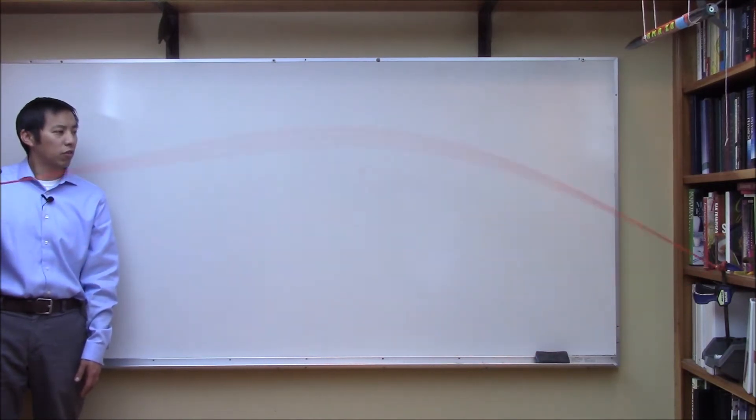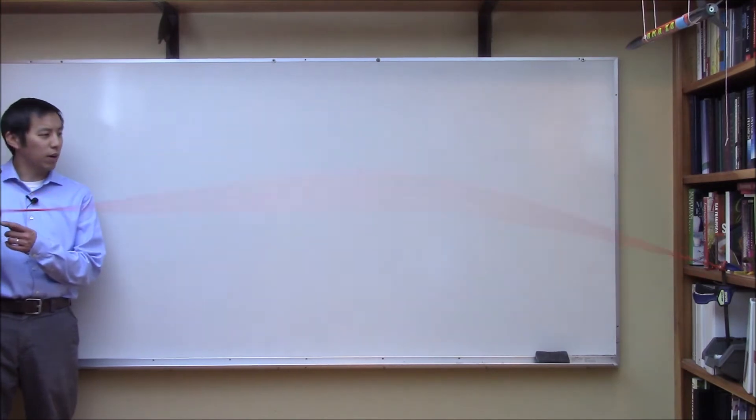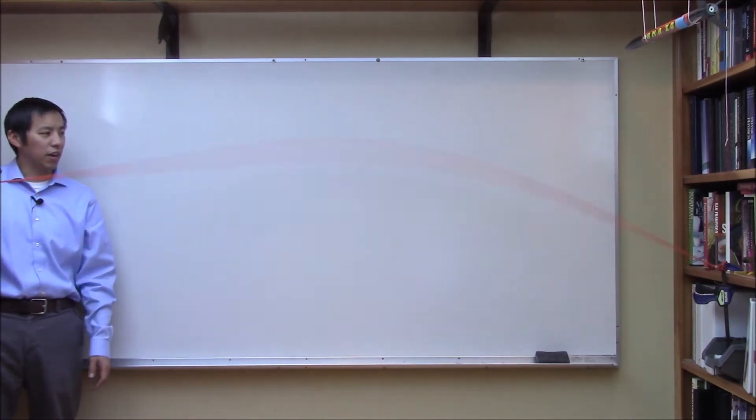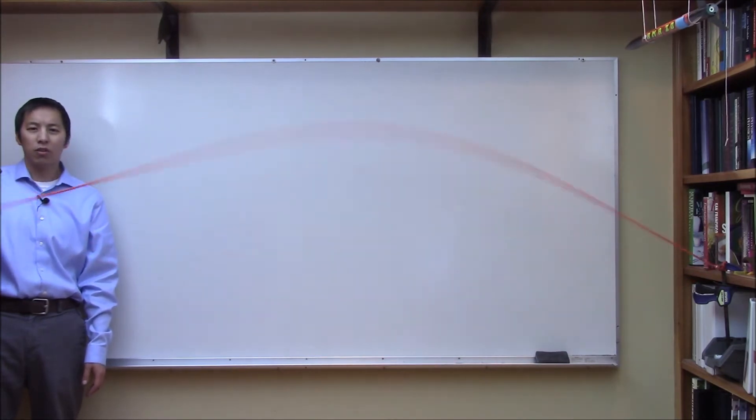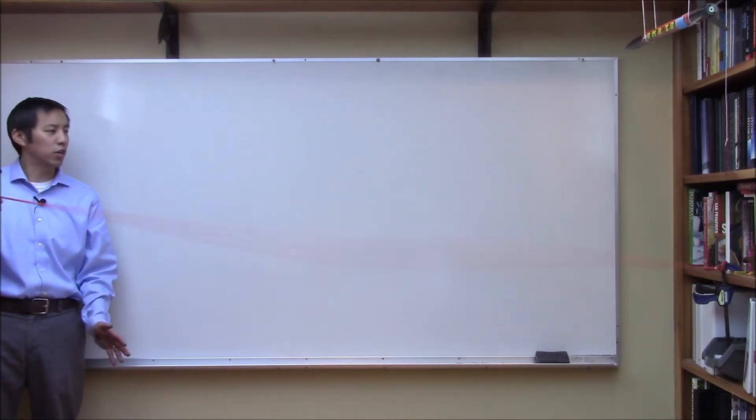At this certain frequency we end up with what are called two nodes. One is at my hand and the other is at the end where it is fixed. A node is a location where there's almost no motion.